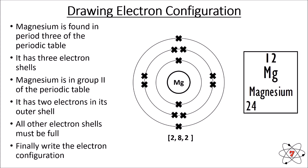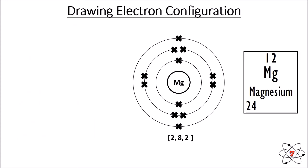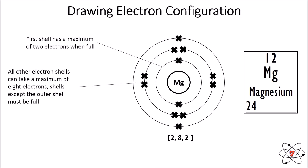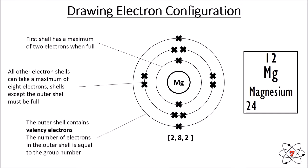No other element will have an electron configuration of 2, 8, 2 — only magnesium. To clarify: the first electron shell has a maximum of two electrons when full; all other shells have a maximum of eight and must be full, with the exception of the outer shell. The outer shell contains our valence electrons, and the number of electrons in the outer shell is always equal to the group number. The total number of electrons must equal the atomic number: 2 plus 8 plus 2 equals 12, which matches — so we've done this correctly.